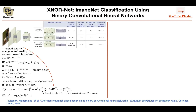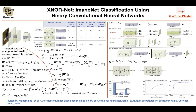The idea with xNorNet is that you want to binarize your convolutional neural networks. You can have binary weights and binary inputs, and because you binarize it, it's going to use less memory and at the same time it's going to be faster.